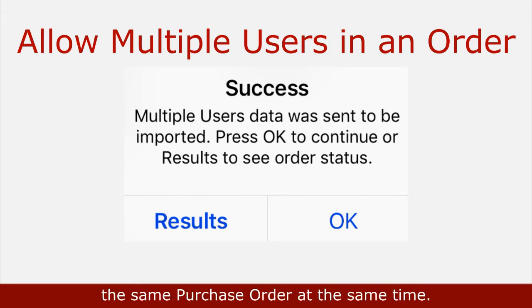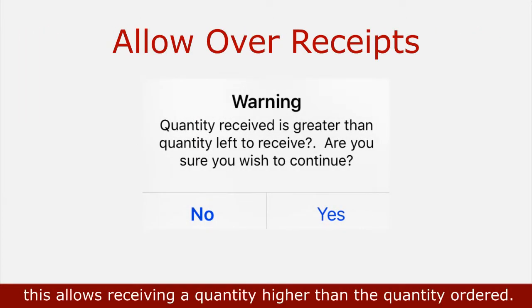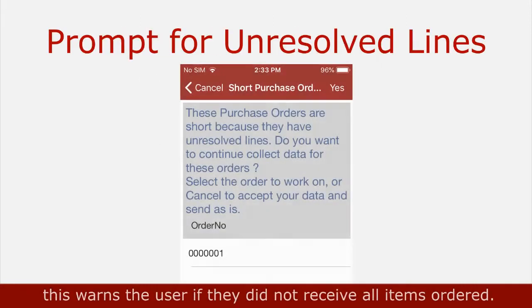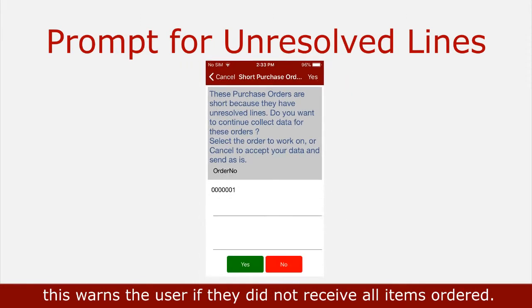Allow multiple users in an order — when enabled, more than one user can receive the same purchase order at the same time. Allow over receipts allows receiving a quantity higher than the quantity ordered. Prompt for unresolved lines warns the user if they did not receive all items ordered.